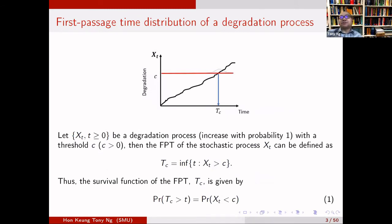What is called first passage time distribution, and why are we interested in it? Consider a one-dimensional example about crack size. A crack keeps growing, and when it reaches a threshold C, the material will break — the crack keeps increasing until it breaks. The breaking point is TC, which is called the first passage time.